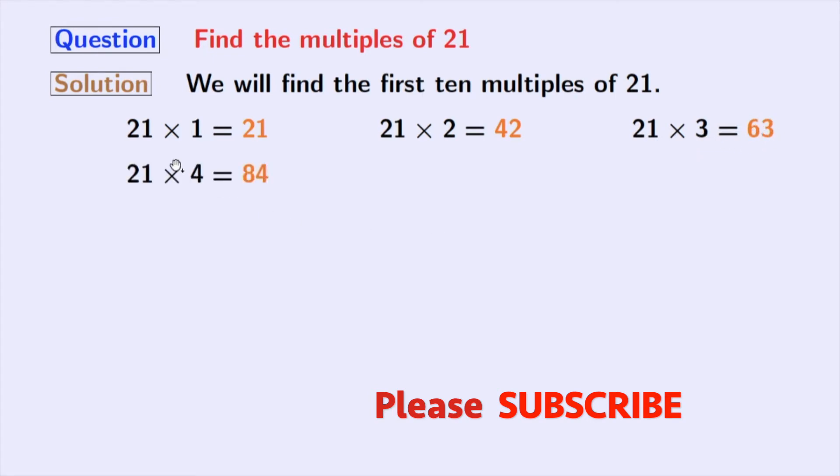Multiplying 21 with 4, we get 84. Multiplication of 21 and 5 gives us 105. Multiplication of 21 and 6 gives us 126.